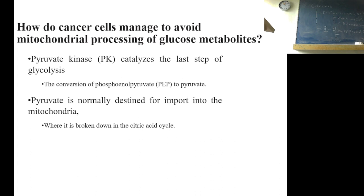How do cancer cells manage, avoid mitochondrial processing of glucose metabolites? Pyruvate kinase, this is an enzyme, catalyzes the last step of glycolysis, conversion of phosphoenol pyruvate to pyruvate. Pyruvate is normally designated for import into mitochondria, where it's broken down into citric acid.